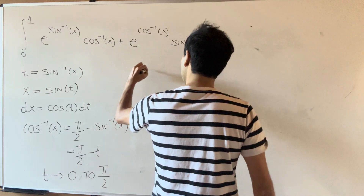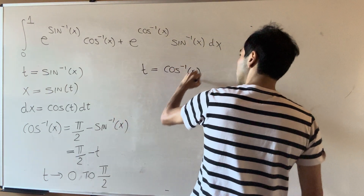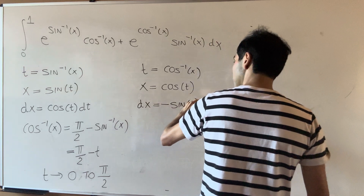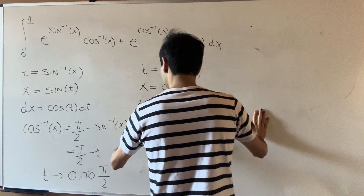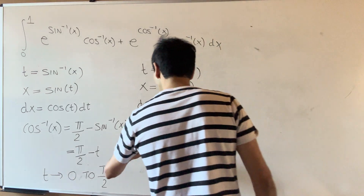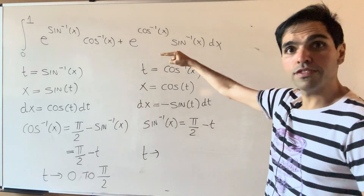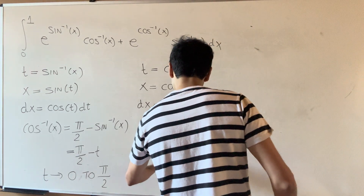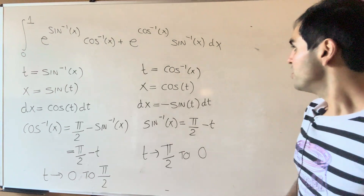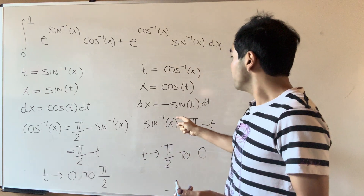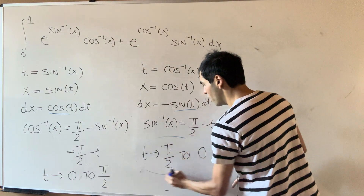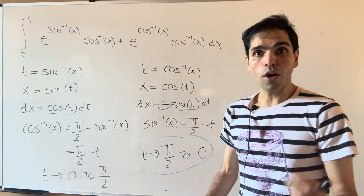Now for the second integral, we'll use t = arccos(x), so x = cos(t). Then dx = −sin(t) dt. Arcsin(x) similarly is π/2 minus t. And this time t ranges from arccos(0) to arccos(1), so from π/2 to 0. If you compare both substitutions, you get something very similar — the only difference is that instead of cosine, for the second integral we have sine. And the reversed limits cancel out with the minus sign.